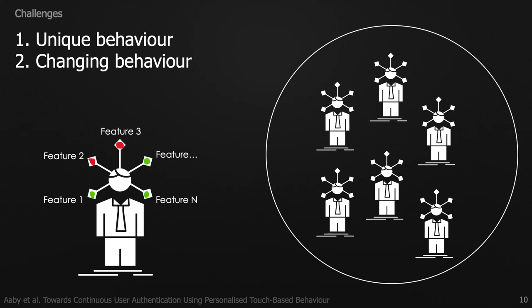In our work, we focus on two remaining challenges. We look to personalize behavior profiles by considering a target user and their features independent from others. We hypothesize that features should be uniquely selected for each user, as all users behave in a unique manner. We see an example of a single user with five different behavioral traits — maybe only three marked green will be important for this particular user, and two may not be important. Other users may find the two red traits important and the three green ones not so important. We are also looking to identify personal behavior and traits that are stable over time, since users may change the way they interact with their devices over time.